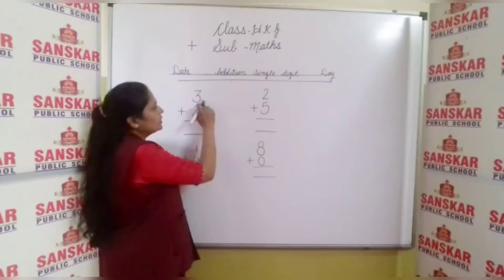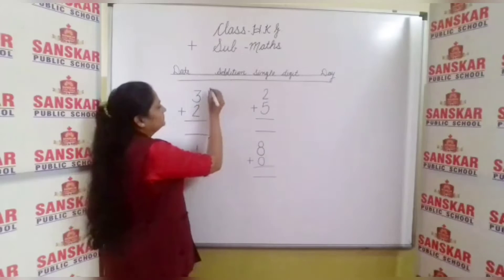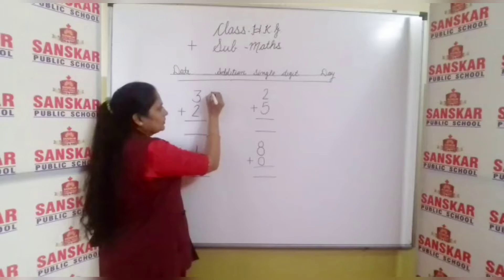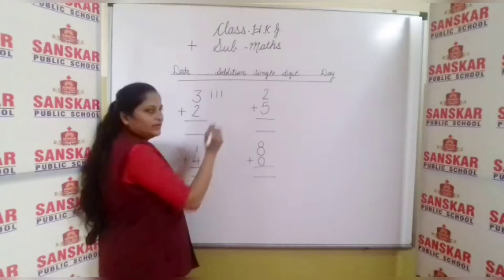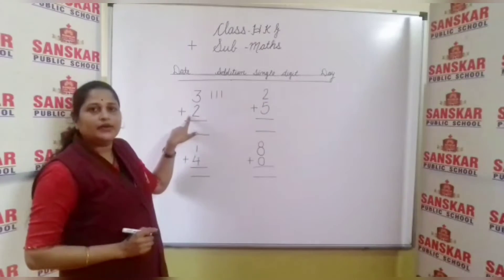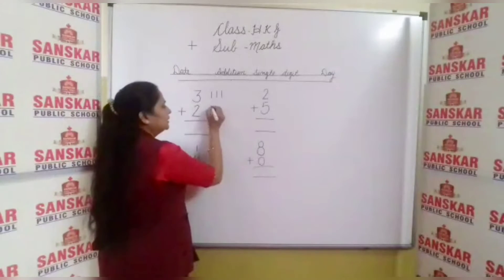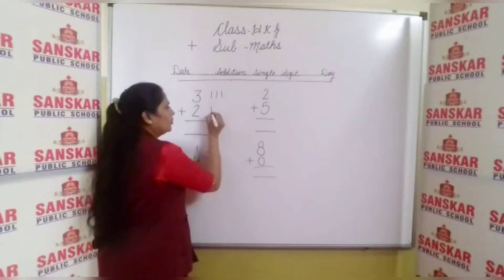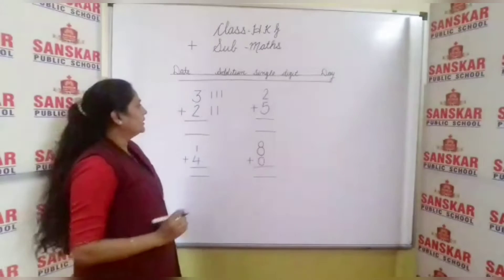First of all, we have to make three lines: one, two, and three. Now the next number is number two, so make two lines: one and two.